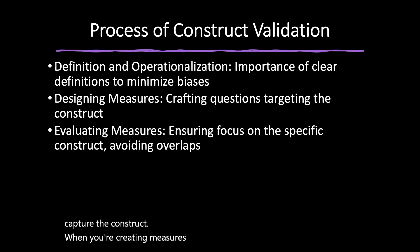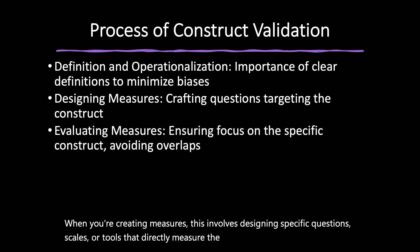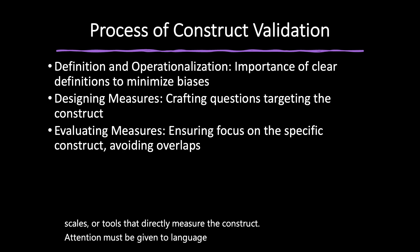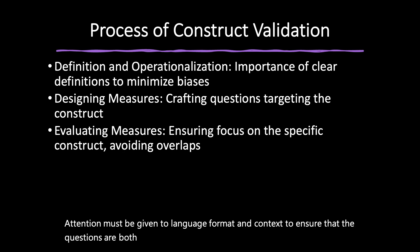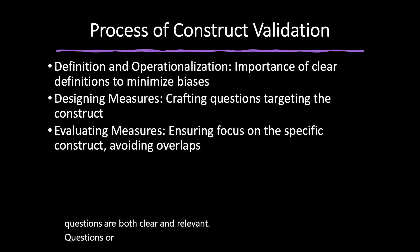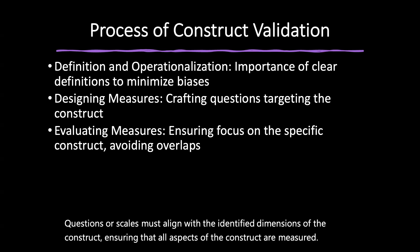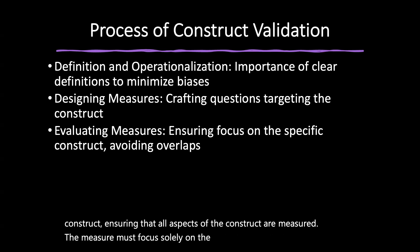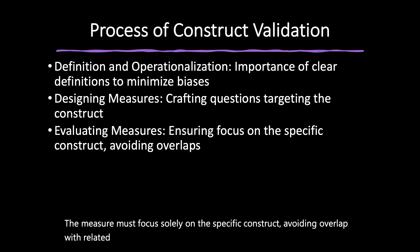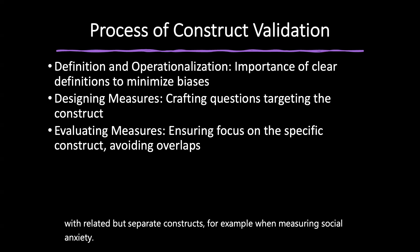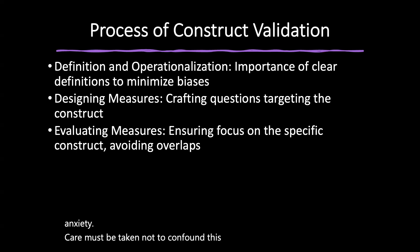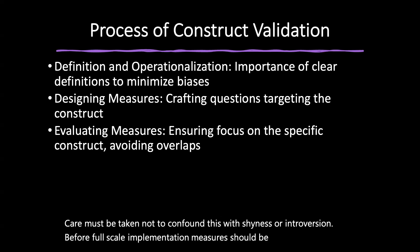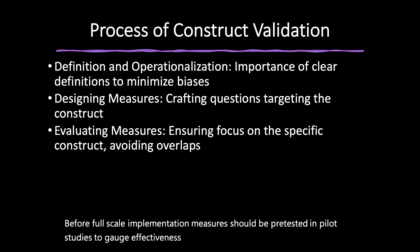When creating measures, this involves designing specific questions, scales, or tools that directly measure the construct. Attention must be given to language, format, and context to ensure questions are clear and relevant, aligning with the identified dimensions of the construct. The measure must focus solely on the specific construct, avoiding overlap with related but separate ones. For example, when measuring social anxiety, care must be taken not to confound it with shyness or introversion. Before full-scale implementation, measures should be pre-tested in pilot studies to gauge effectiveness, clarity, and reliability.